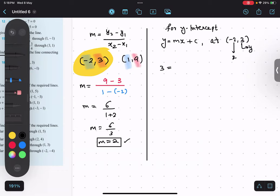m—m value is 2—and x value is minus 2 plus c. I'm doing it directly: it is minus 4 plus c. I'll shift this to the other side: 3 plus 4 equals c, 7 equals c.